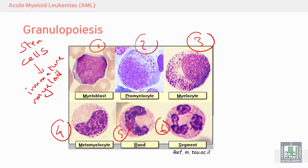We can see there is a difference in the nucleus and cytoplasm between all of these cells. Maturation is accompanied by differences in the nucleus and differences in the cytoplasm. If we compare the nucleus across stages 1 through 6, we can see nuclear change.